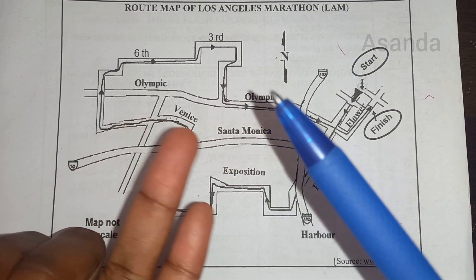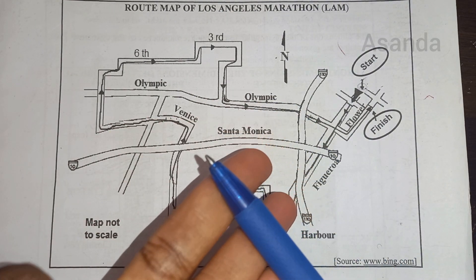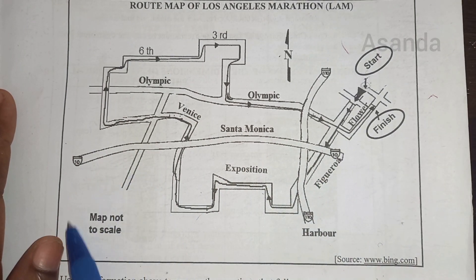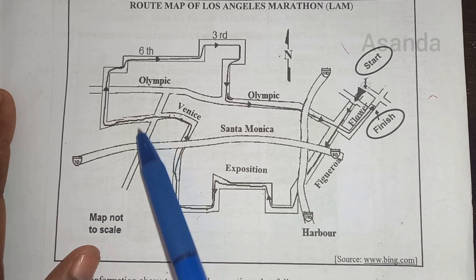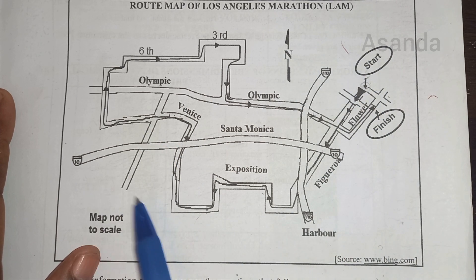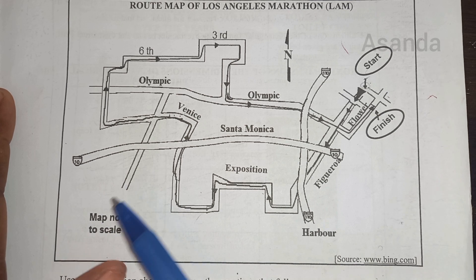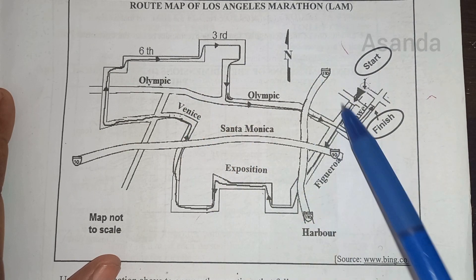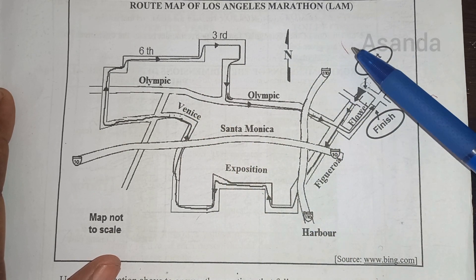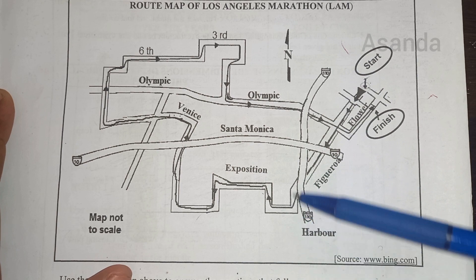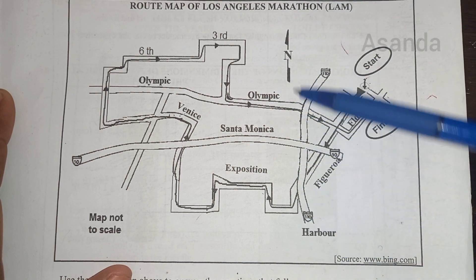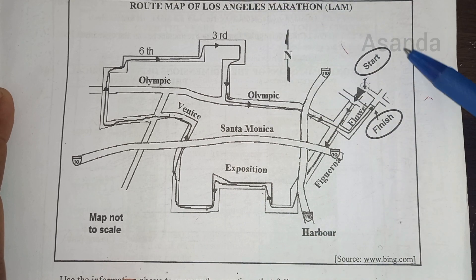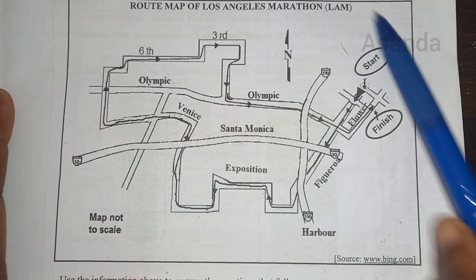Now for this map, we look for a scale, true north, keys, and then read the details. Starting with scale: 'map not to scale' — so we won't find a scale here. For north, we find that true north is pointing straight upwards. For keys, we do not have any keys here. So: no scale, no keys, but we do have north.